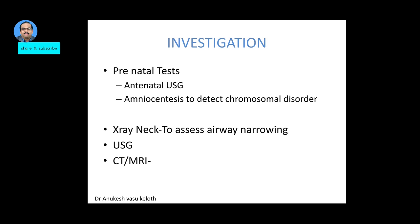Regarding investigations: as these are congenital lesions, when detected during an antenatal ultrasound, amniocentesis can be performed to rule out chromosomal abnormalities. If seen after birth, especially in cystic hygroma, the large size can cause compression of adjacent structures like the trachea, so an X-ray of the neck can assess airway narrowing. Ultrasound, CT, or MRI can also be done for further evaluation depending on the site and size of the lesion.